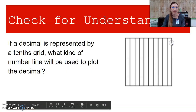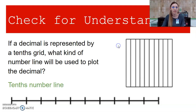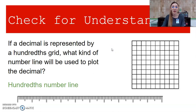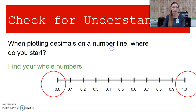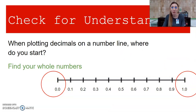All right, let's do a check for understanding. If a decimal is represented by a tenths grid, what kind of number line will be used to plot the decimal? Go ahead and pause the video and get your answer. We would use a tenths number line. When plotting decimals on a number line, where do you start? We find our whole numbers first. This helps us know if we're working in tenths or hundredths, or if we have any whole numbers that need to be recorded.